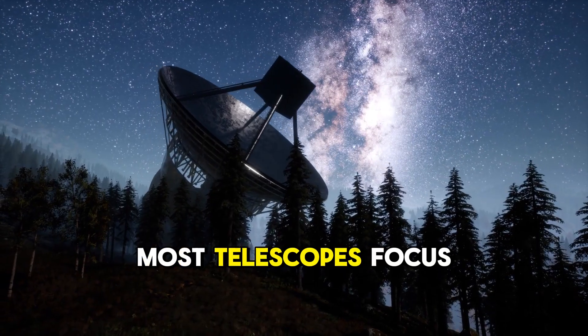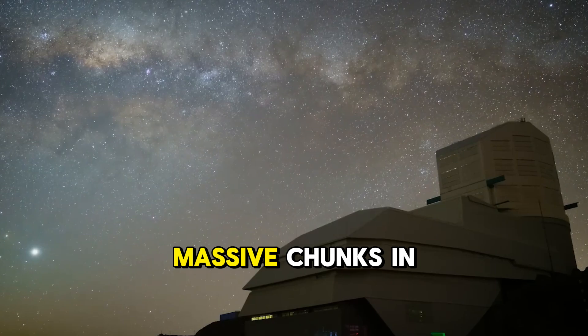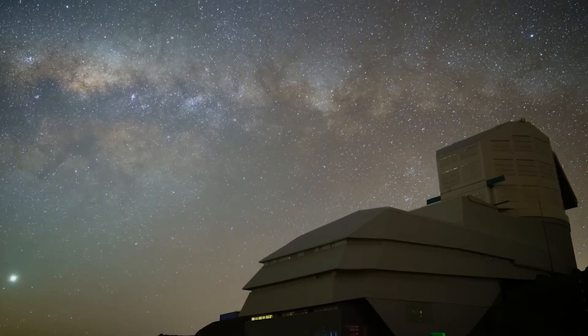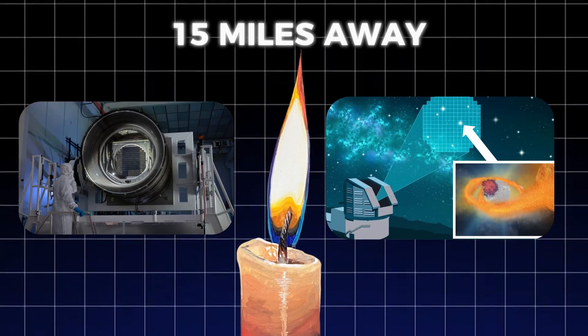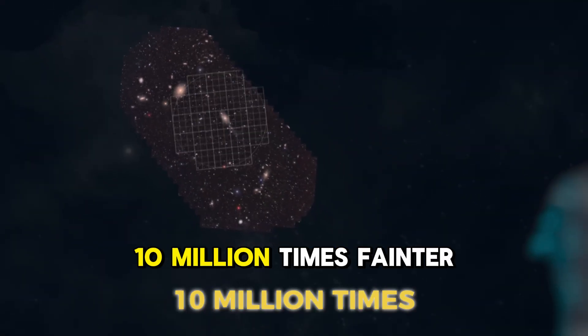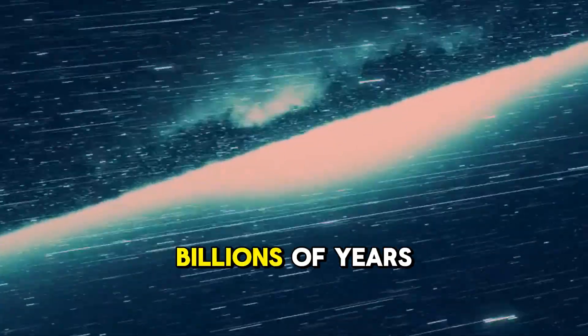To put that in perspective, most telescopes focus on tiny patches of sky. This one captures massive chunks in a single shot. The camera is so sensitive it could spot a candle flame from 15 miles away. It can detect objects 10 million times fainter than what your eyes can see. When it looks at distant galaxies, it's literally seeing back in time billions of years.